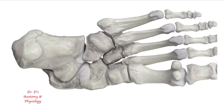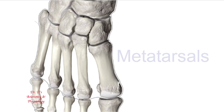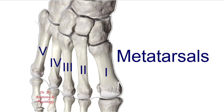Here again is a superior view of the foot. The bones that come after or beyond the tarsal bones are the metatarsal bones. Meta is a prefix that means after or beyond, similar to what we saw with the metacarpal bones of the hand. The metatarsal bones are numbered with Roman numerals starting medially with Roman numeral one to the lateral side with Roman numeral five. These are long bones; the expanded proximal end is called the base and the expanded distal end is called the head, with the shaft in between.